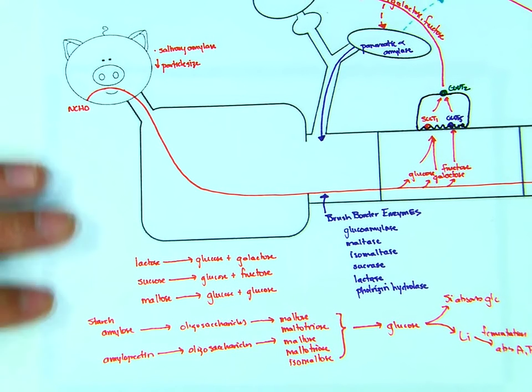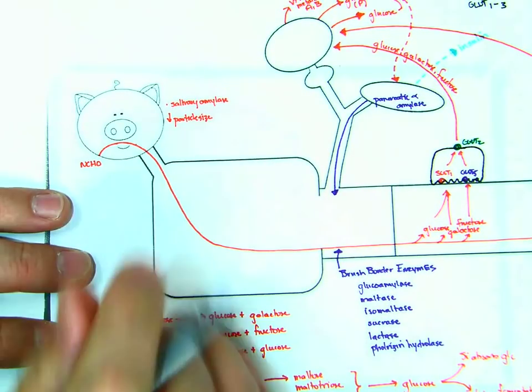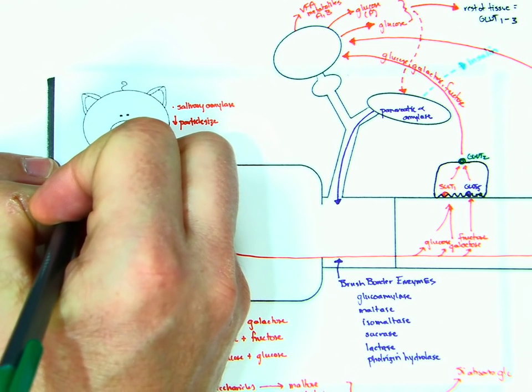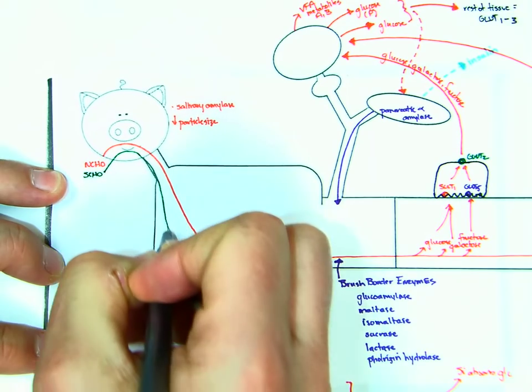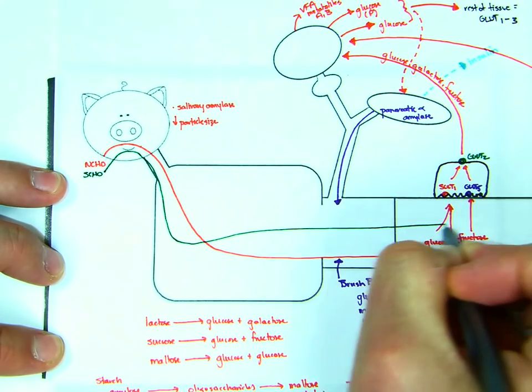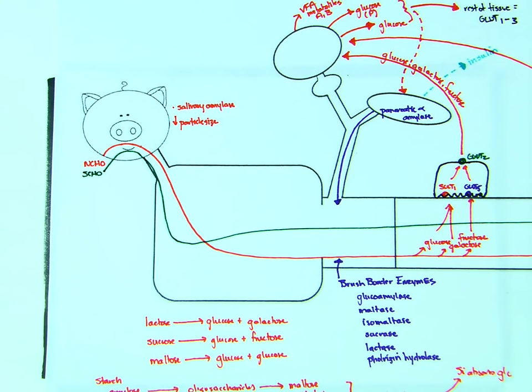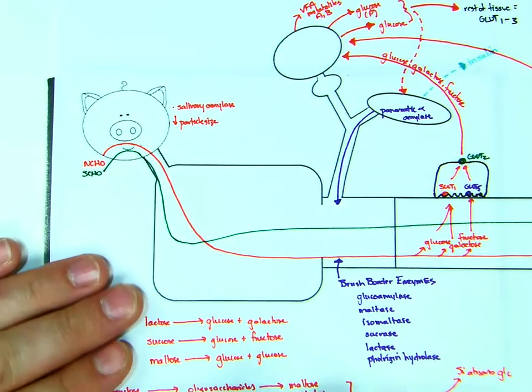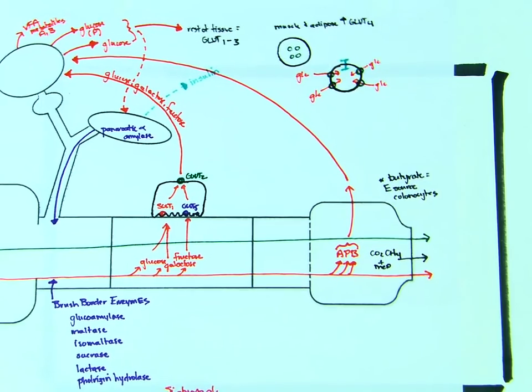Okay. Good deal. Now we will do structural carbohydrates in the pig, which we're not going to feed a lot of structural carbohydrates to pigs. But sometimes we do feed them some. You'll have the same reduction in particle size in the mouth. And as you move through, nothing's going to happen. Nothing's going to happen. Nothing's going to happen until you get to the large intestine.